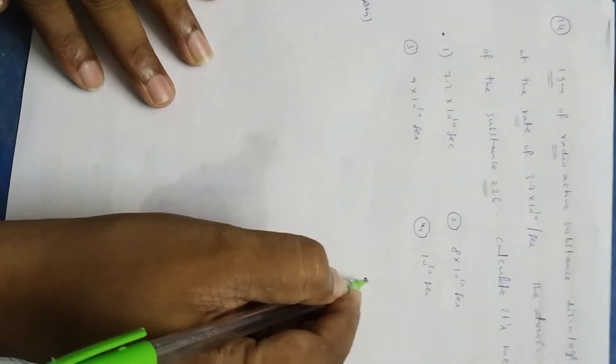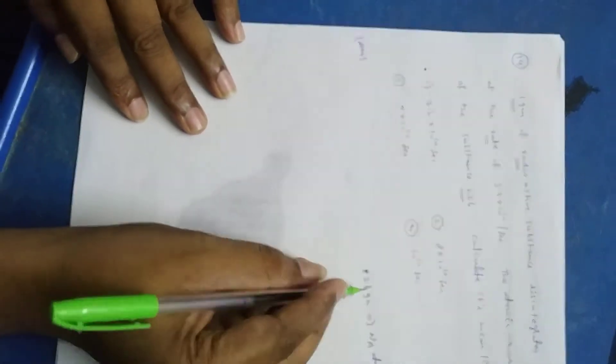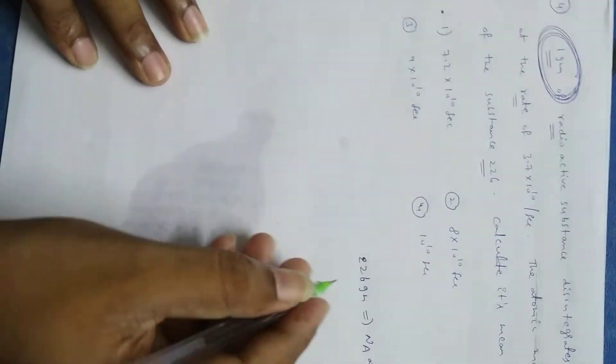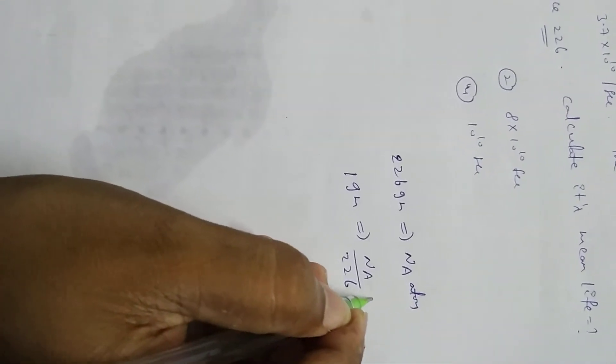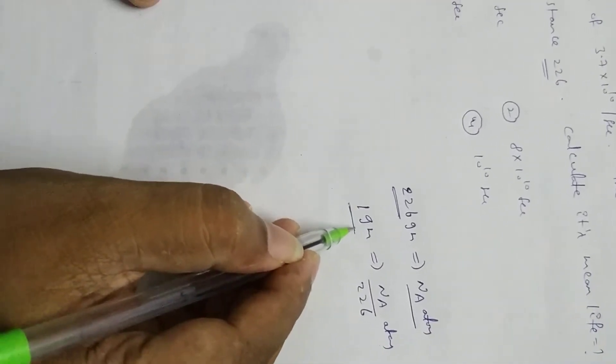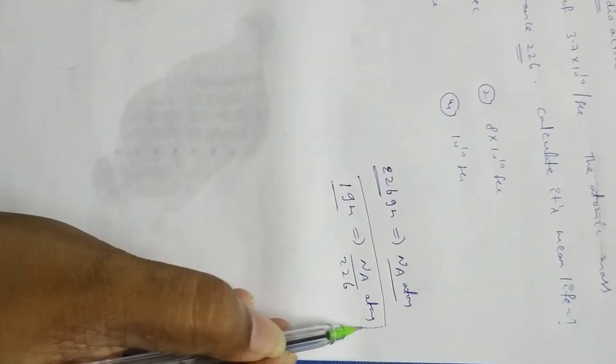Here, 226 grams contains generally Avogadro number of atoms. To calculate how many atoms 1 gram of substance contains: 226 grams have Avogadro number of atoms, so 1 gram means both sides divided by 226, that means 1 gram has Na by 226 atoms.